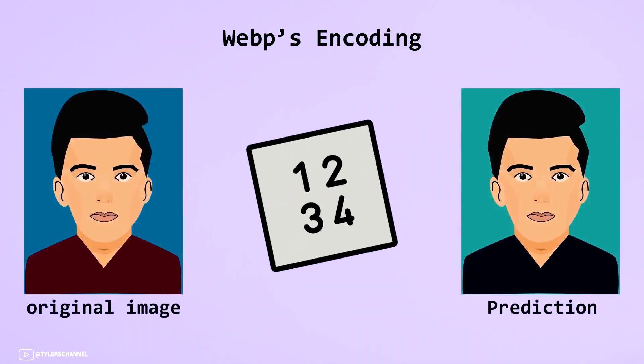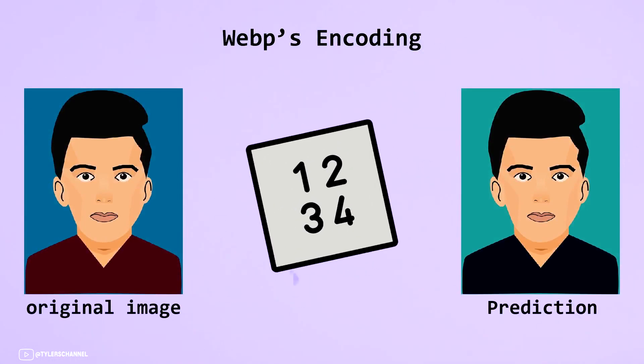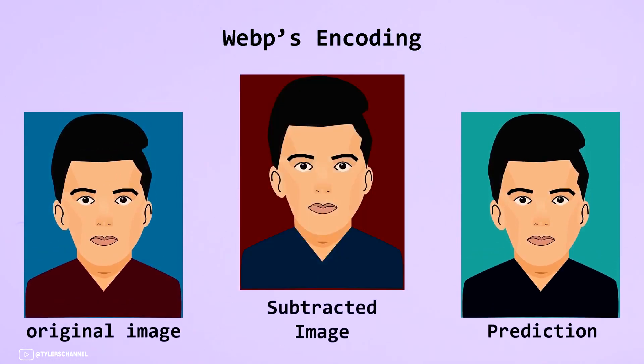WebP compression uses predictive coding to encode an image by using the values in neighboring blocks of pixels to predict the values in a block, and then encodes only the difference.